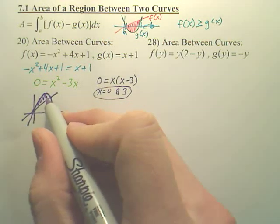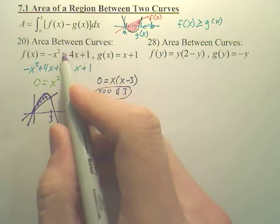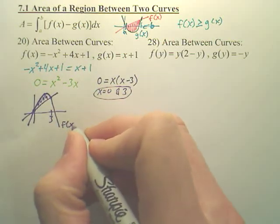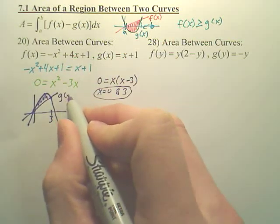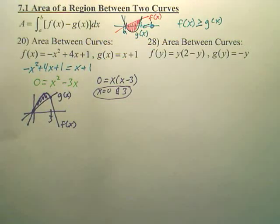Now, do you also know by looking at the graph, do you understand that f, this is f of x, and this is g of x. The line is g of x, and this is f of x.